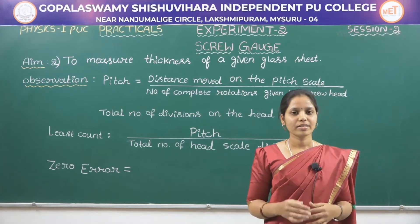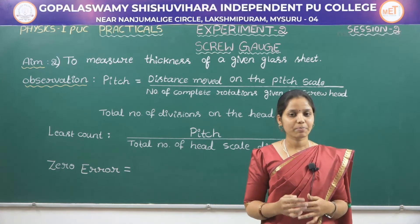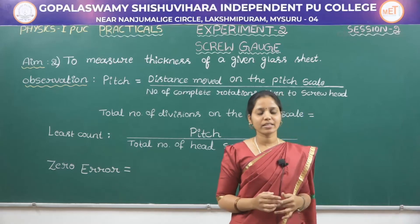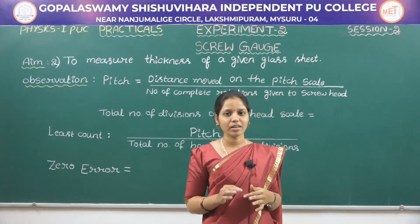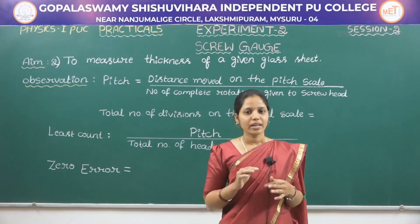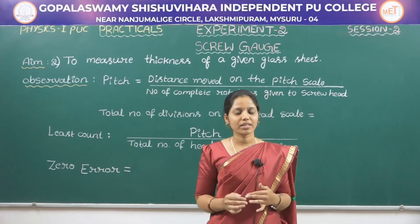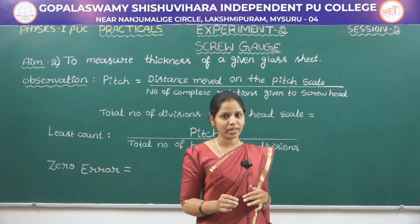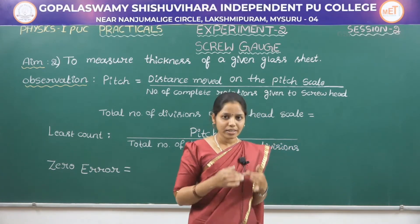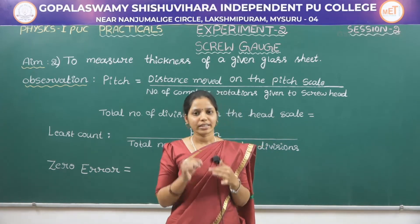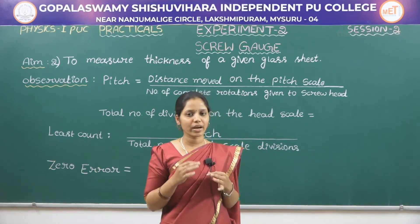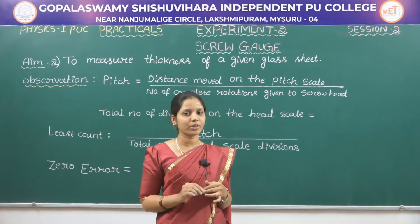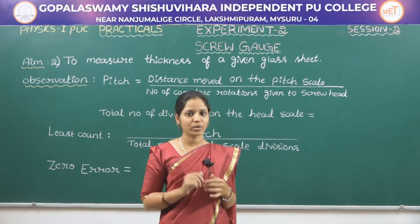Hello everyone, this is our physics practical class. We are in the second session of the second experiment called screw gauge. In the last session we measured the diameter of a spherical ball using screw gauge. In this session we have to measure the thickness of a glass sheet and find the volume of an irregular lamina using screw gauge.